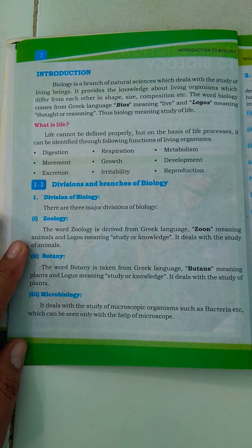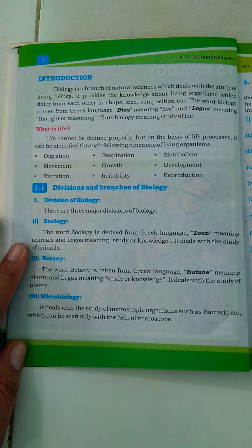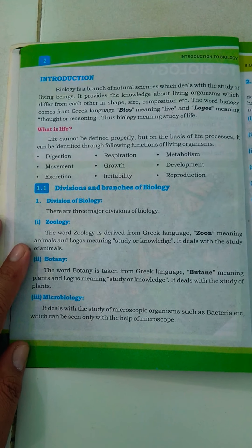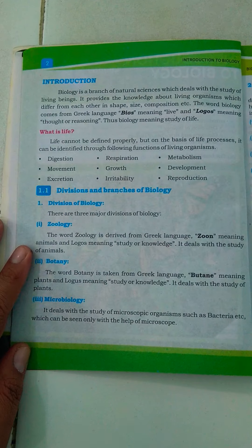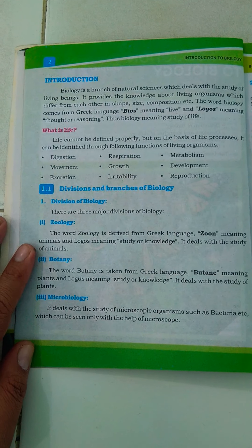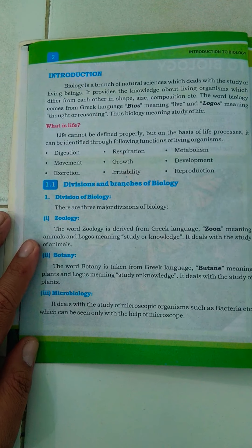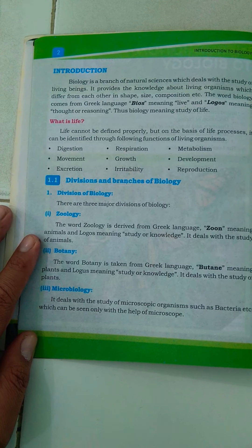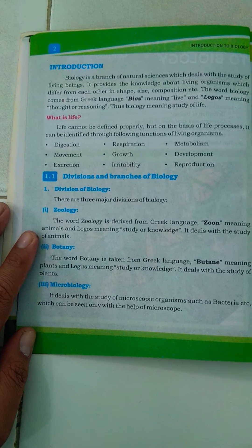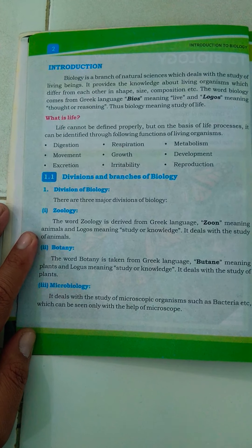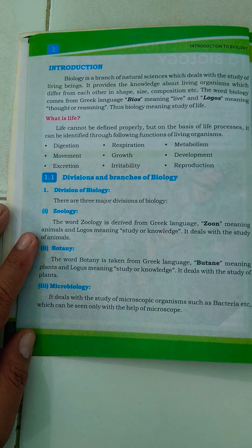Life cannot be defined properly in simple terms, but in biological language, life can be identified on the basis of life processes. These life processes are functions of living organisms that cannot be obtained from non-living material.